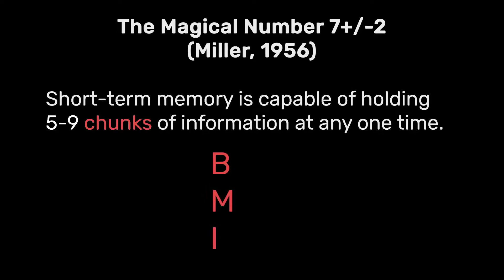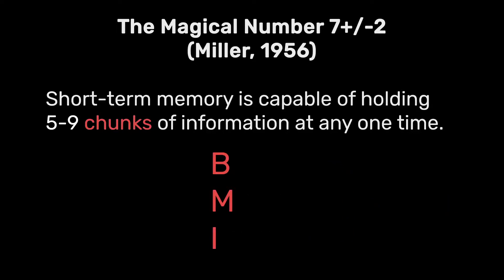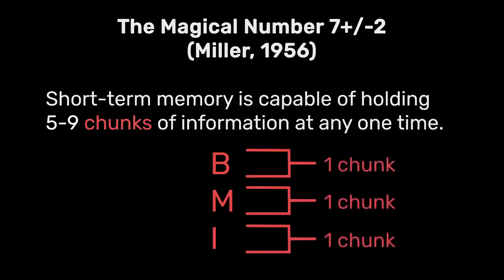If you know what BMI refers to — the body mass index — that for you is a chunk, because it's a meaningful chunk of information. So BMI is one chunk. If you don't know what it means, then it's three chunks of information, because B, M, and I would be three separate chunks of meaningful information for you.